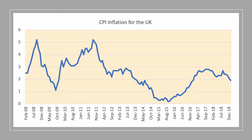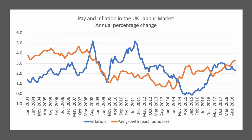Inflation is now falling back towards target. The CPI inflation rate was 1.9% in February 2019, so as you head towards your exams, inflation is now back in target range. If we then look at inflation relative to wages, this chart shows the rate of growth of inflation in blue and the rate of change of pay excluding bonuses shown in orange.